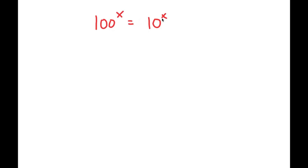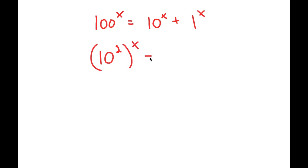In this video, I'm going to be solving the problem 100 to the power of x is equal to 10 to the power of x plus 1 to the power of x. To solve this, I'm first going to rewrite 100 to the power of x as 10 squared to the power of x. So now this is equal to 10 to the power of x plus 1 to the power of x.